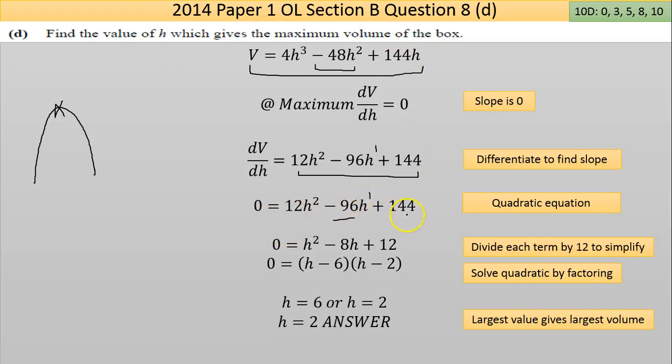Now I have a quadratic. That function, the equation 12h squared, is equal to change in volume with respect to change in h. That's another way of saying the slope. At the maximum point the slope is 0, so I can swap that term for 0.